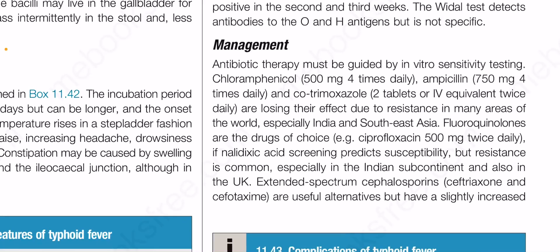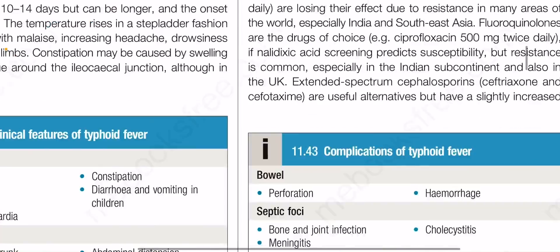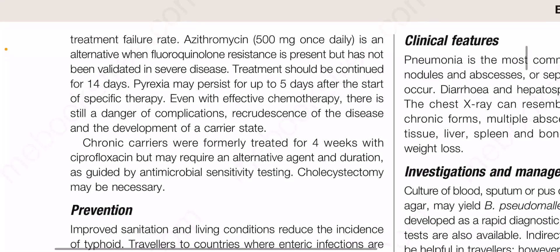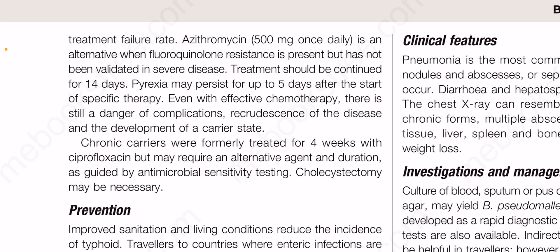Especially in the Indian subcontinent and the UK, extended-spectrum cephalosporins and azithromycin are useful alternatives but have a slightly increased treatment failure rate. Azithromycin 500 mg once daily is an alternative when fluoroquinolone resistance is present but has not been validated in severe disease. Treatment should be continued for 14 days. Pyrexia may persist for up to five days after the start of therapy. Chronic carriers were formally treated for four weeks with ciprofloxacin but may require an alternative agent guided by antimicrobial sensitivity testing.